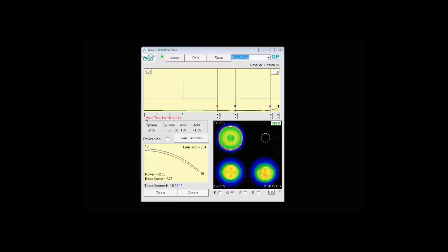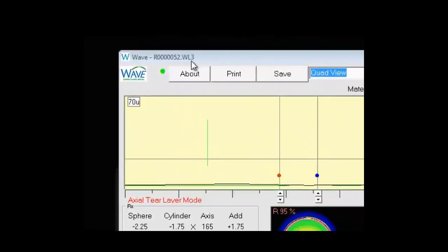So here we have a WAVE lens open, and we'll start at the upper left screen. We have WAVE, dash, and then a file name. The .wl3 in this case indicates it's the third lens based under a topography. If we had four, five, or six lenses under there, we'd see .wl4, .wl5, and .wl6.